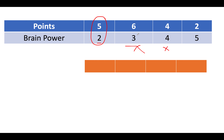If we consume the second question, the next three future questions are blocked. If we consume the third question, the next four future questions are blocked. If we consume the fourth question, the next five future questions are blocked.